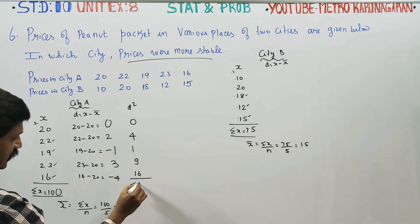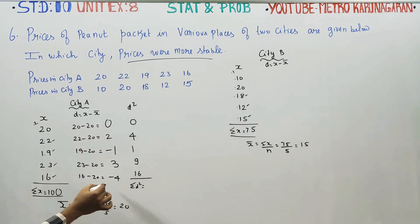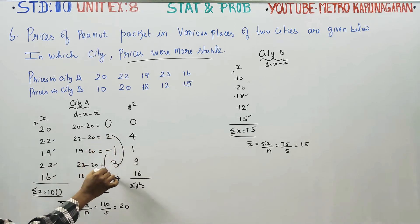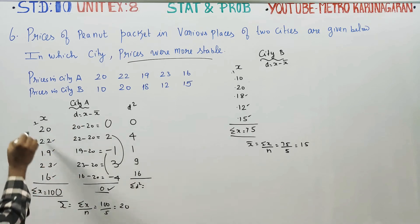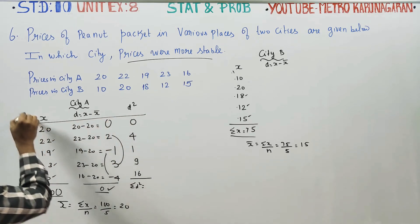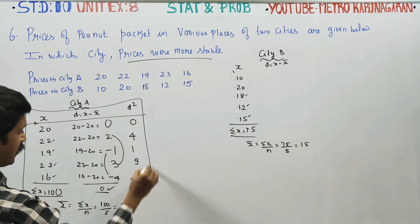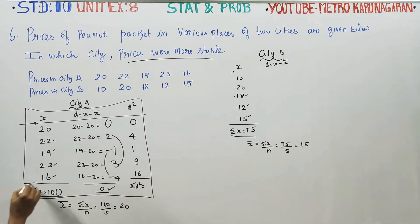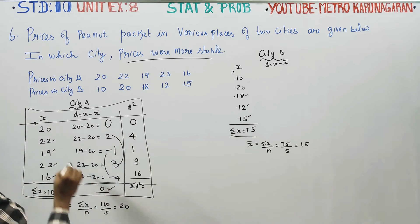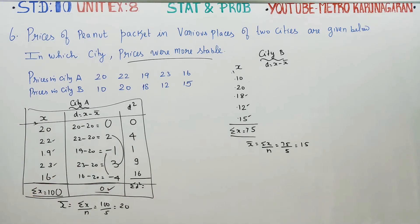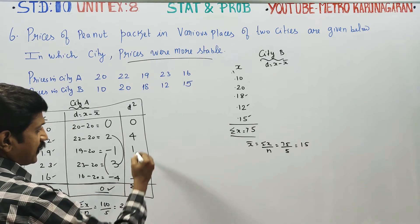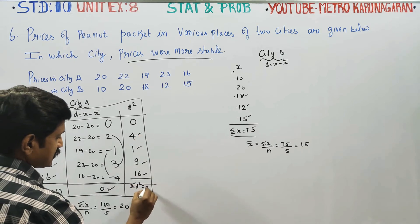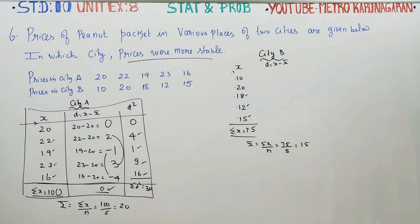Find sigma d squared. In the actual mean method, the sum of d values should equal 0 — check that it does: 5 minus 5 equals 0. This confirms correctness. This method is called the actual mean method or mean deviation method. The sigma d squared row totals are 25, 25, 26, 26, 30 — so sigma d squared equals 30. We have completed the City A table.